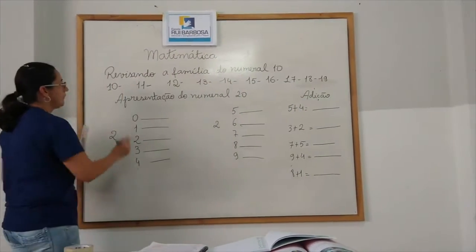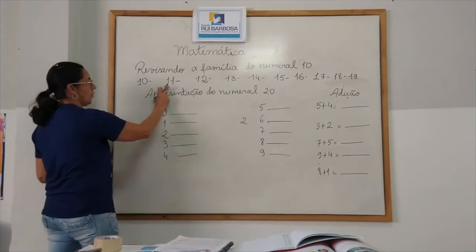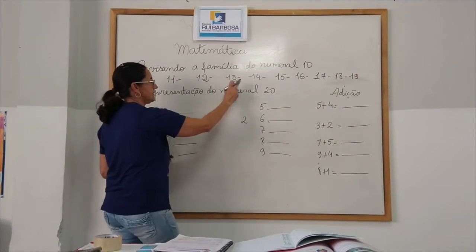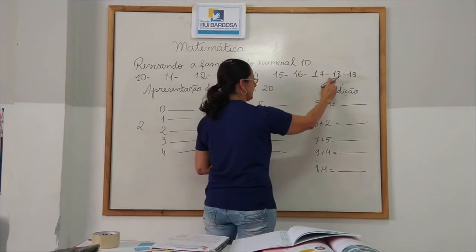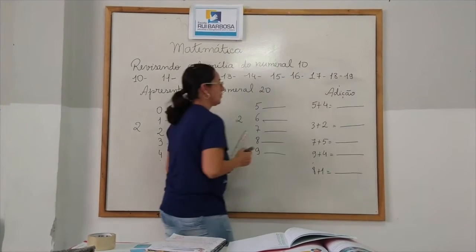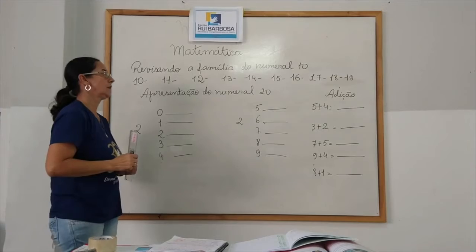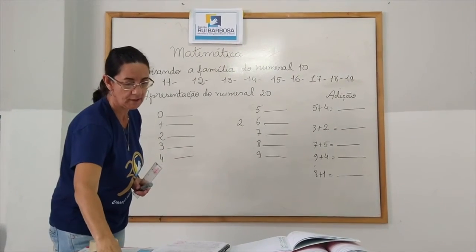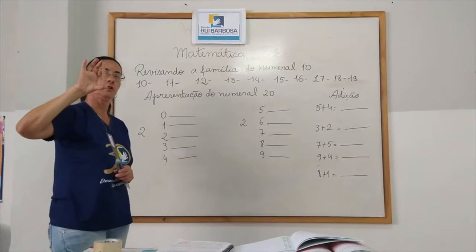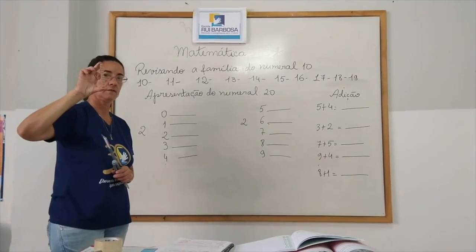Então, aqui eu tenho a família do número 10. 10, 11, 12, 13, 14, 15, 16, 17, 18, 19. Recoçando que 10 é igual a uma decena que é igual a uma tirinha, 10 unidades. Certo?